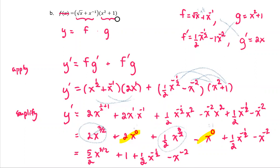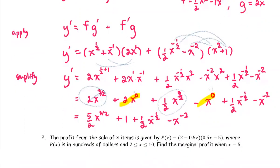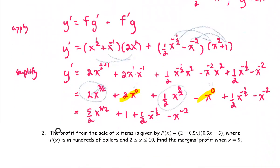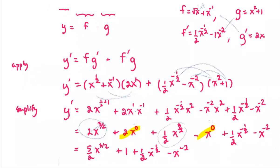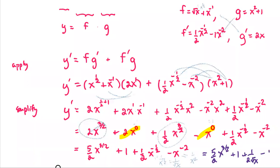We have fractional powers and negative powers, so we can do one more simplification step. The negative power one half x to the negative one half is the same as 1 over x to the power one half, which is 1 over square root x. And x to the negative second is the same as 1 over x squared. So if asked to write the answer in positive power form, the final answer is 5 over 2 times x to the power 3 over 2, plus 1, plus 1 over 2 times square root x, minus 1 over x squared.